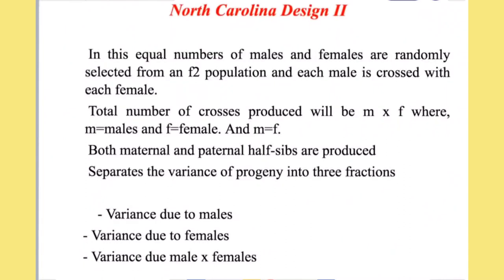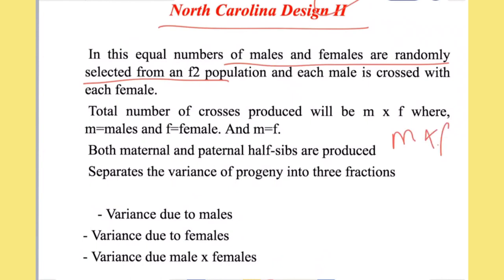The variance among females is equal to one-fourth of the additive variance plus one-fourth of the dominance variance. Now let's come to the NCD2 design. In NCD2, equal numbers of males and females are randomly selected from the F2 population, and each male is crossed with the same set of females. In NCD1, each male is mated with a different set of females.